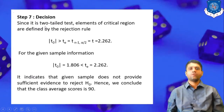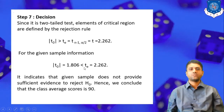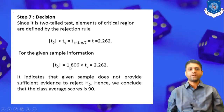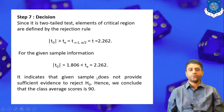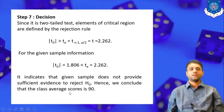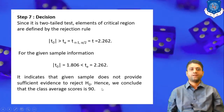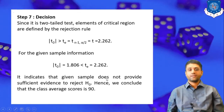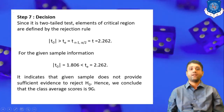Step 7: decision. We compare |t₀| with the tabulated t-value. The observed t-value is 1.806 and the tabulated t-value is 2.262; since 1.806 < 2.262, the given sample does not provide sufficient evidence to reject the null hypothesis. Hence, we conclude that the average score of the 10 students is 90. The null hypothesis is accepted.